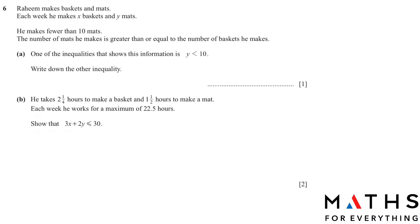Question number six is a linear inequality question. Raheem makes baskets and mats. Each week he makes X baskets and Y mats. He makes fewer than 10 mats, so Y is less than 10. The number of mats he makes is greater than or equal to the number of baskets he makes, giving Y greater than or equal to X. So part A is done.